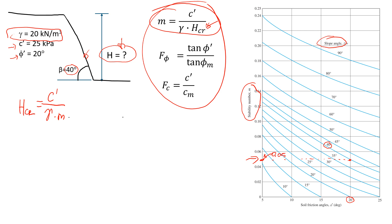So now I'm going to put this number in the formula. We know that effective cohesion is 25 kPa. We're going to divide it by the unit weight, which is 20, and multiply by 0.05 — that's the value of m from the chart. That should give us a value of 25 meters, which will be the critical value of h at which the slope is still stable.